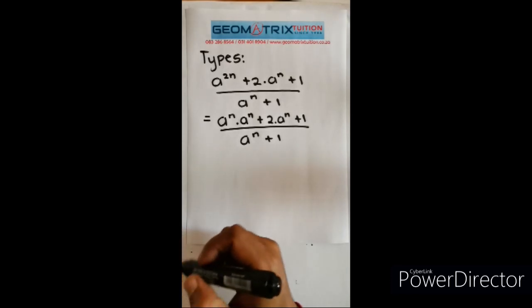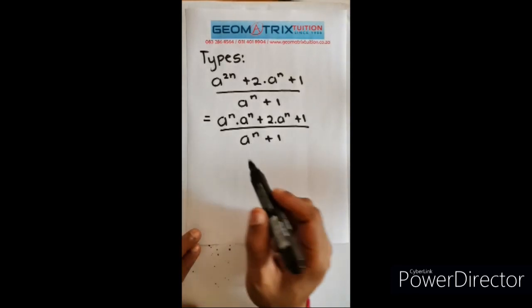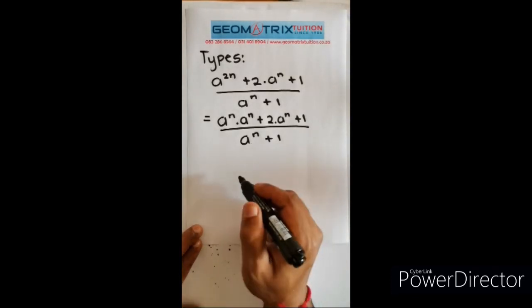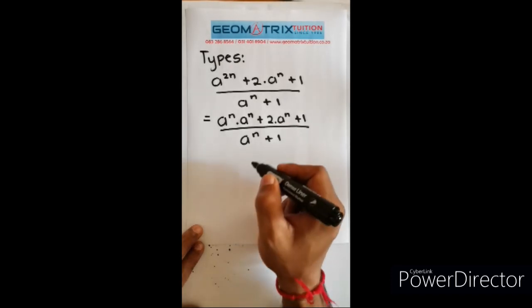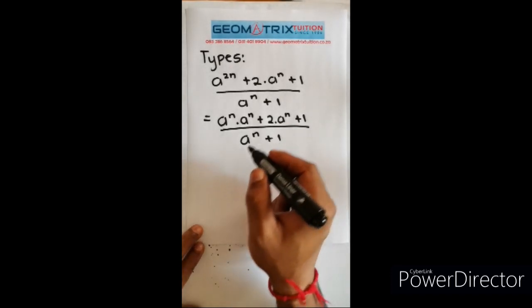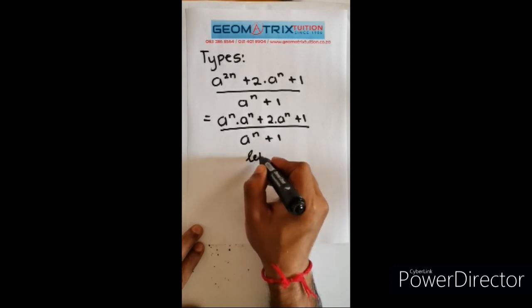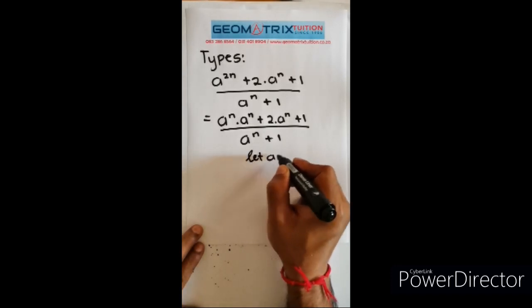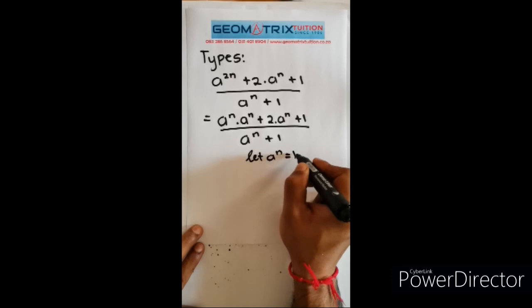So once you reach this point which looks harder, which part looks harder? The a to the n part. So now we use the k method. All you do is write the following: let a to the n equal to k.